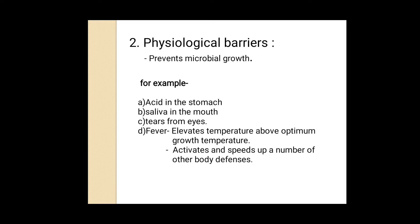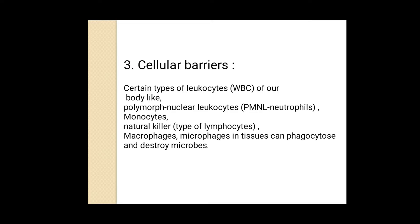The third barrier is the cellular barrier, which directly tries to kill the pathogen. As per the name, this cellular barrier consists of different types of cells. Certain types of leukocytes — that is, WBCs — such as polymorphonuclear leukocytes (PMNLs), monocytes, natural killer cells, macrophages, and microphages, perform phagocytosis and destroy the pathogen.